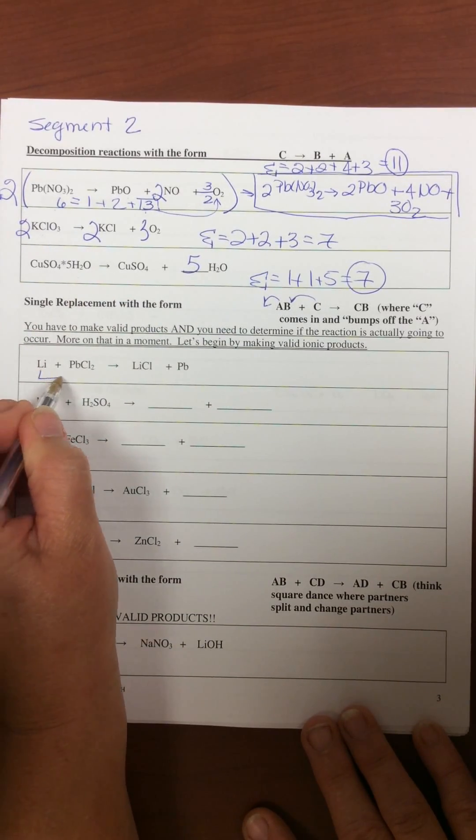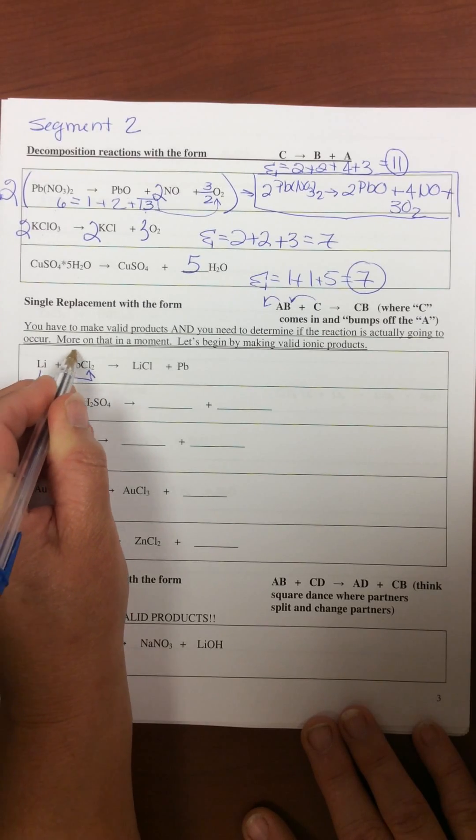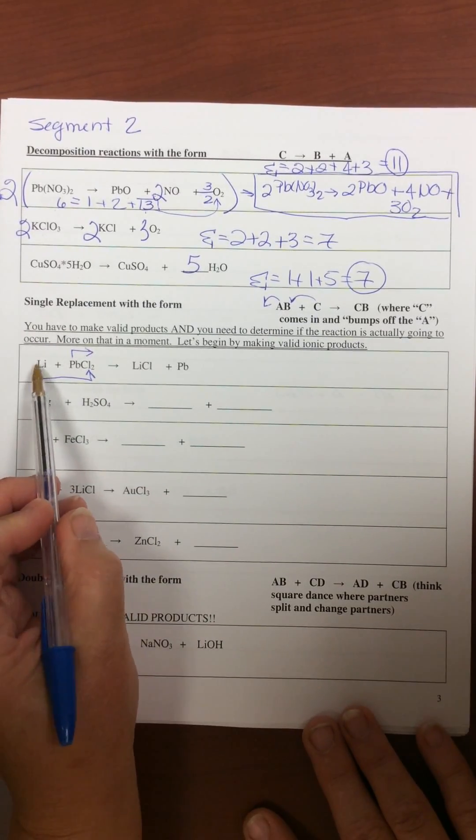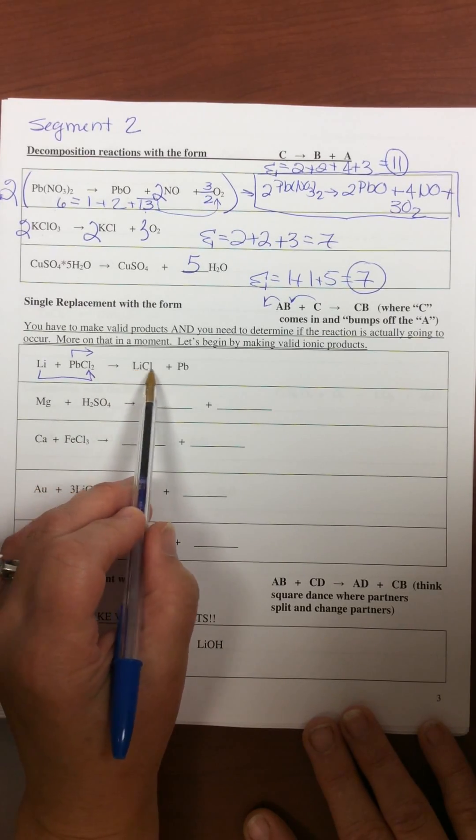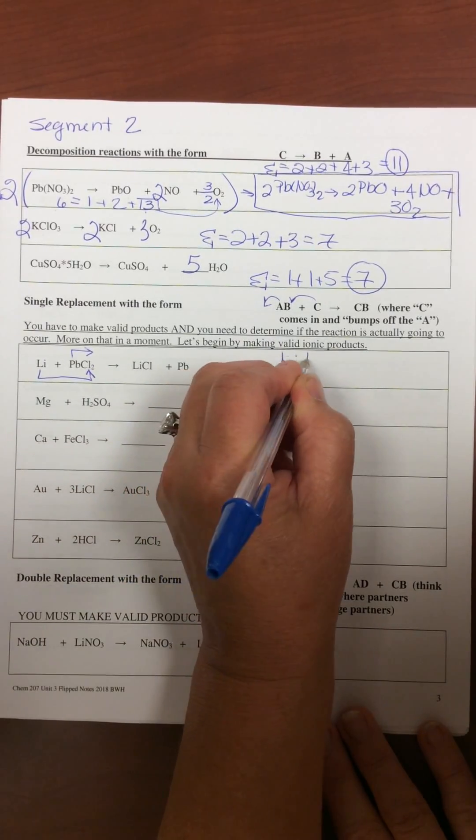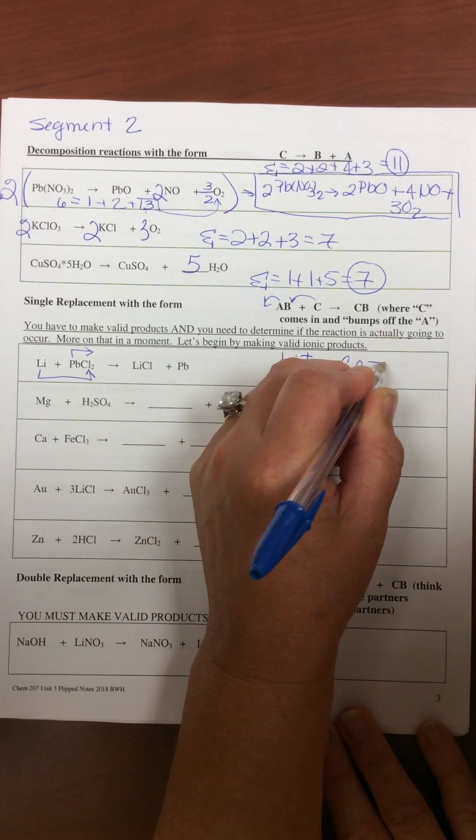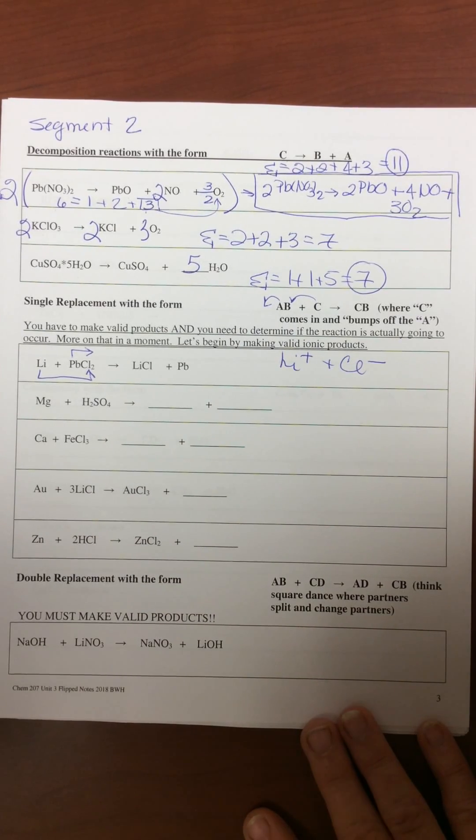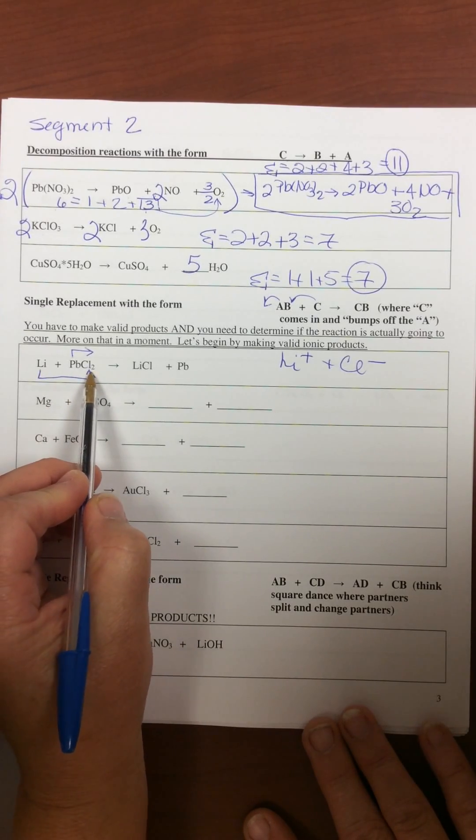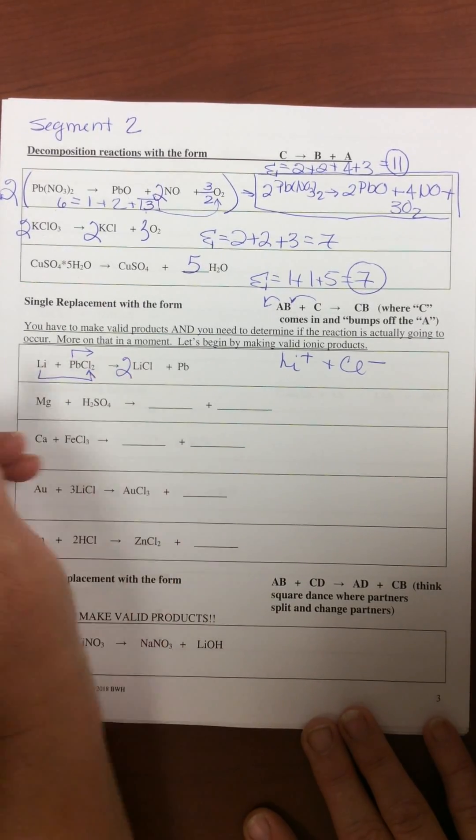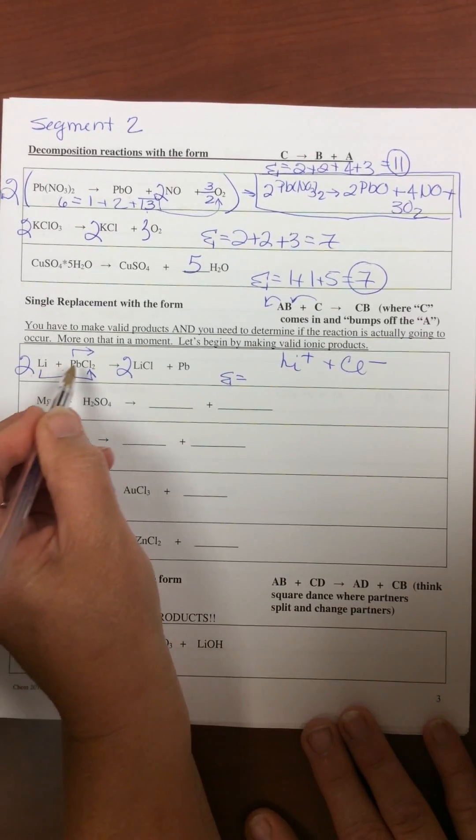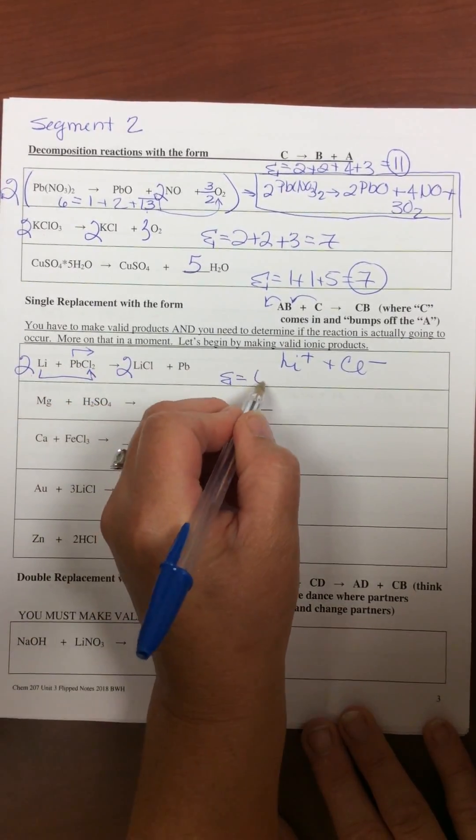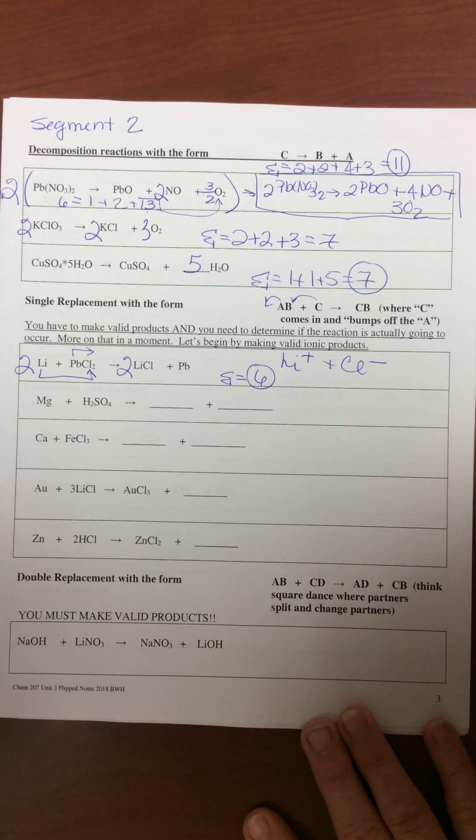So the lithium will combine with the chlorine and displace the lead. Lithium then has to pair with the chlorine in a valid way, which is why we get LiCl, because lithium forms a plus, chloride forms a minus. Then you need to balance it. The only thing that's out of balance is the chlorine. Two here, two there. Which means the sum is two plus one plus two plus one, which equals six.